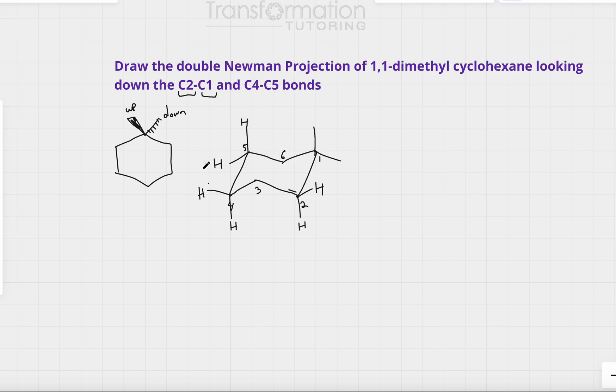Now that my Newman projection is drawn I will be looking at carbon 2 to carbon 1 bond and carbon 4 to carbon 5 bond and I will be looking basically looking this way.